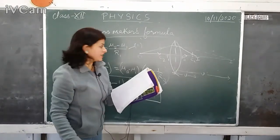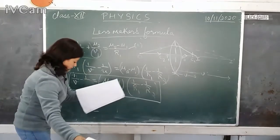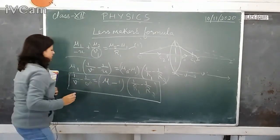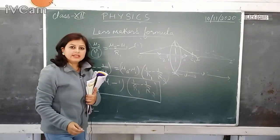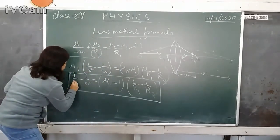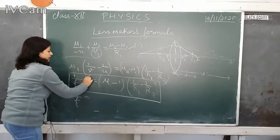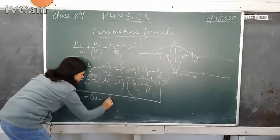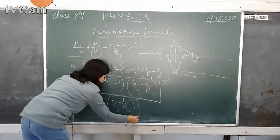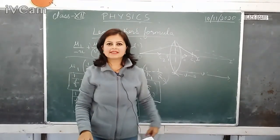If we place the object at infinity, u equals infinity, so 1/u equals 0. When the object is at infinity, the image is formed at the principal focus, meaning v equals f. So we can rewrite the formula as: 1/f equals (mu minus 1) times (1/R1 minus 1/R2). This is popularly known as the lens maker's formula and is very important from the ISC examination point of view. That is all for today's class. Thank you for your attention.